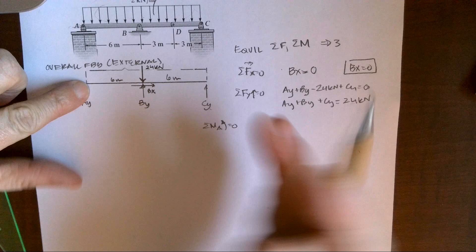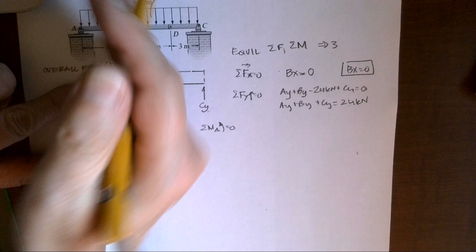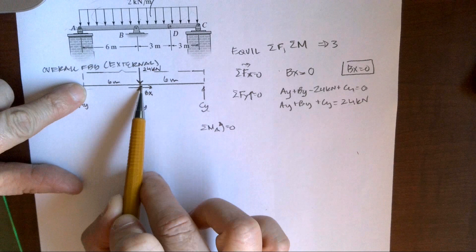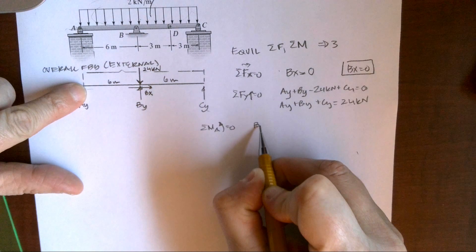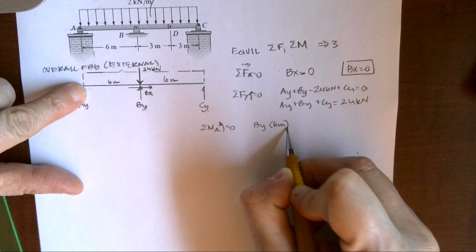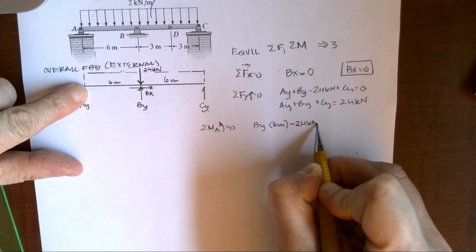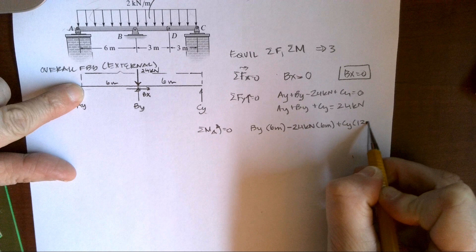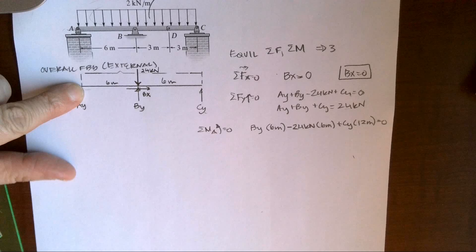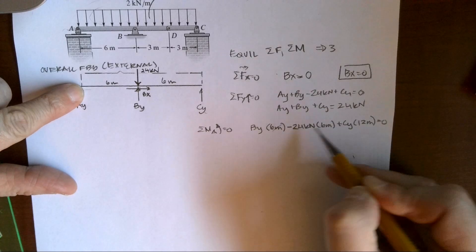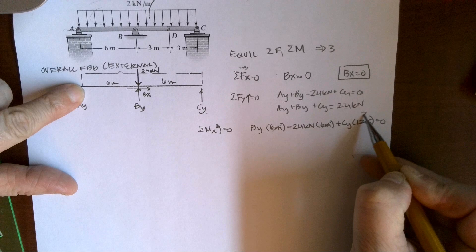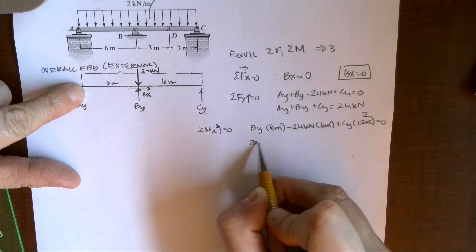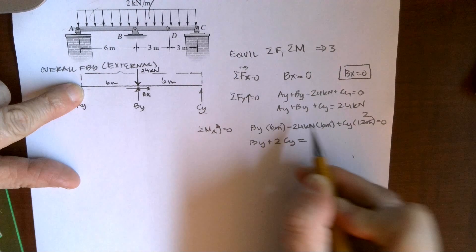And we're going to use right-hand rule positive. So counterclockwise, if I come across, I have BY making a positive moment times 6 meters. I have minus 24 kilonewtons, also times 6 meters, plus CY times 12 meters. And all of this equals zero. I'm going to get my meters out. And that 6, I'm going to just make that a 2. We're going to simplify. I like simple math. So I get BY plus 2CY equals 24 kilonewtons.